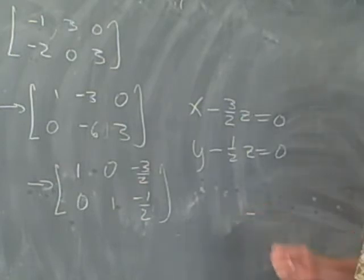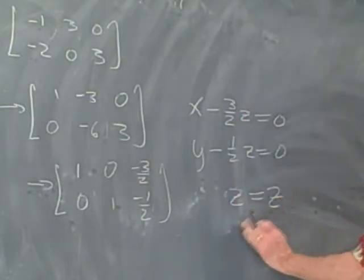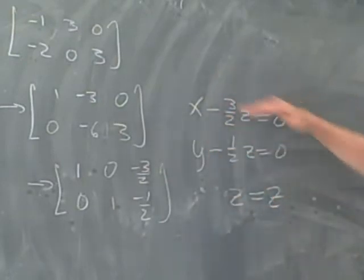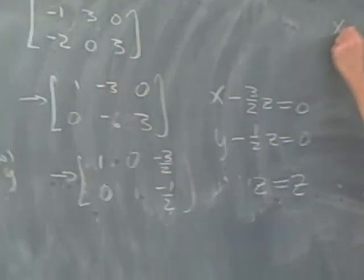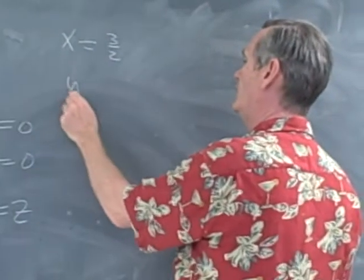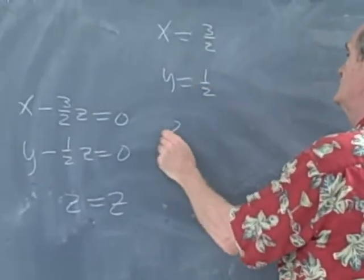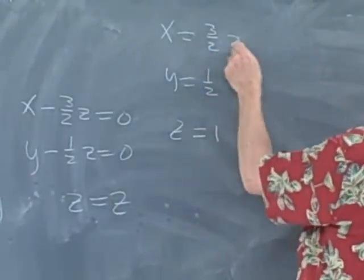And they say, I don't know, and I say, yeah, you're right, you don't know, so z is equal to z. Now we can rewrite this here, and we get x is going to be equal to 3 halves, y is going to equal to 1 half, z is equal to 1. These are all times z.